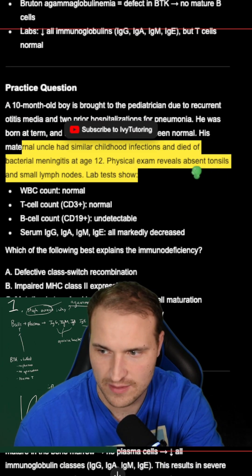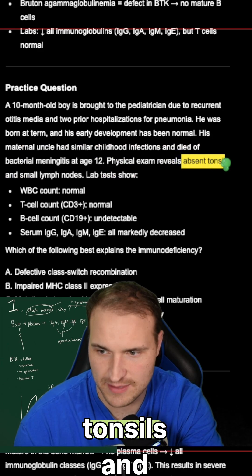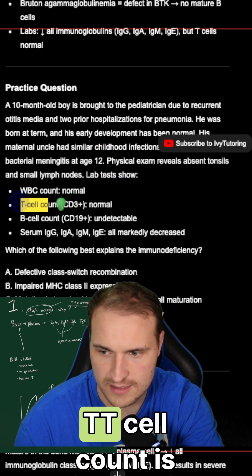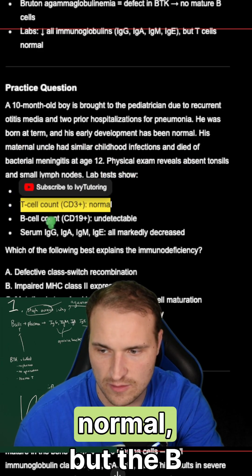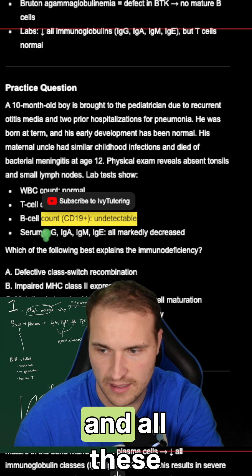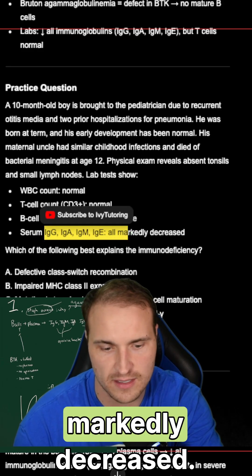The exam reveals absent tonsils and small lymph nodes. T cell counts are normal, but B cells are undetectable, and all these immunoglobulins are markedly decreased.